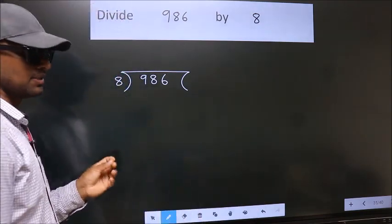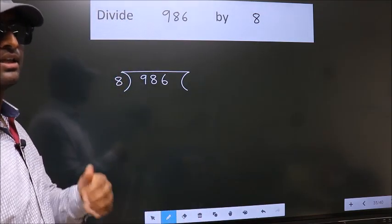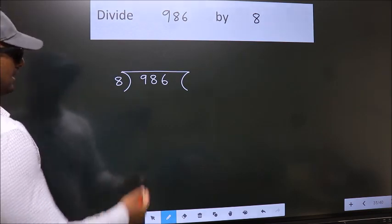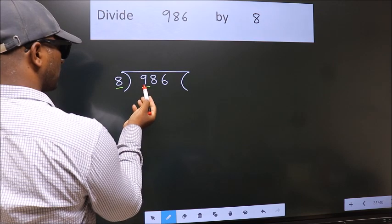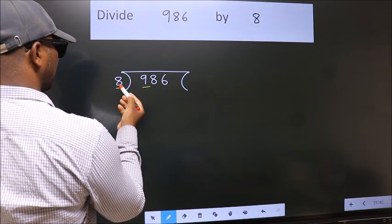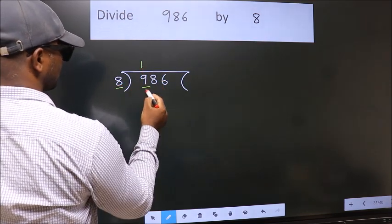This is your step 1. Next, here we have 9. A number close to 9 in the 8 table is 8. Once 8.